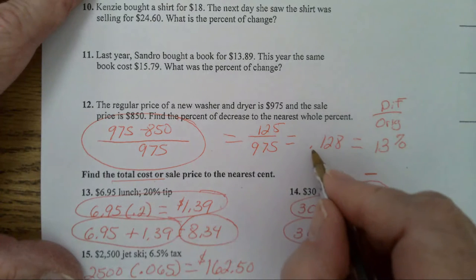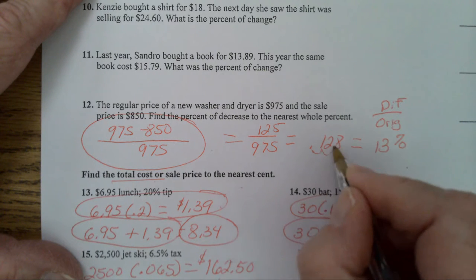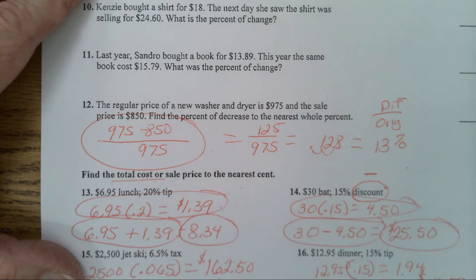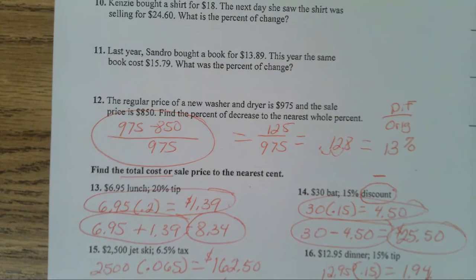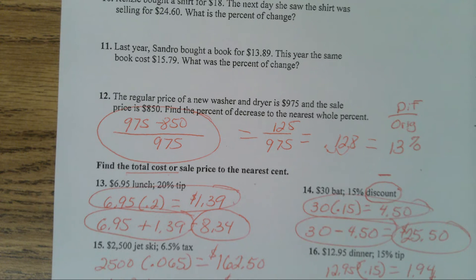Now let's figure out what our percent is: 975 minus 850, 125 over 975. So you then divide, you get 0.128. Does it tell you? Oh, to the nearest whole percent. So that'll be 13%. Do you see how I got 13%? You change your decimal to a percent. The 8 turns the 12 into a 13. It said to the nearest whole percent.